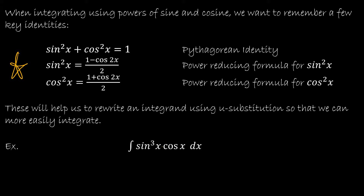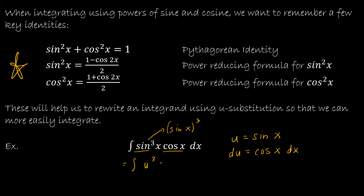The goal here is: if I've got something involving sine and cosine, I want to do a u-substitution where I make u one of those functions. The derivative of sine is cosine of x, so I can rewrite the integral. Sine to the third power of x is the same as (sin x)³, so this becomes the integral of u³ du, because sine to the third is u³ and cosine of x dx is du.